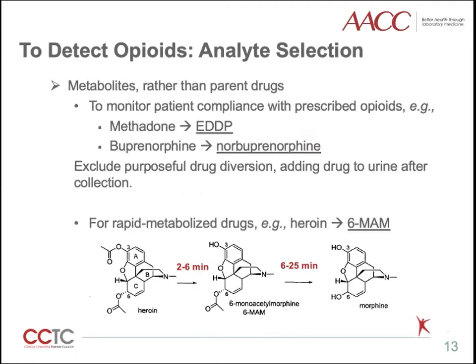One condition is to monitor patient compliance with a prescribed opiate. Metabolites can exclude the possibility of adding drugs to urine after sample collection. Therefore, they can distinguish real administration from urine adulteration. For example, EDDP is used to monitor patient compliance when prescribed methadone, and norbuprenorphine for buprenorphine.